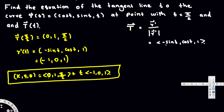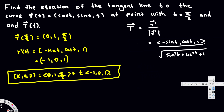The magnitude of the tangent vector is the square root of the sum of squares. We get: (-sin t)² + cos²t + 1². When we square the negative it becomes positive, so we have sin²t + cos²t + 1.